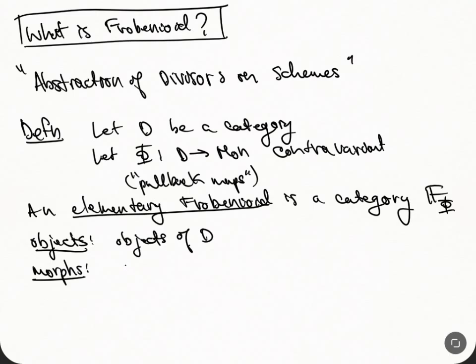An elementary Frobenioid is a category F sub phi where the objects are just going to be objects of this category D, this base category. And the morphisms, so we call that the base category sometimes. And the morphisms are going to be complicated. The morphisms are going to be triples. So we'll take three objects S, T, R, because I'm going to have to show you how they compose. And so they're going to be triples here: F, let's call this alpha N, G, beta M.